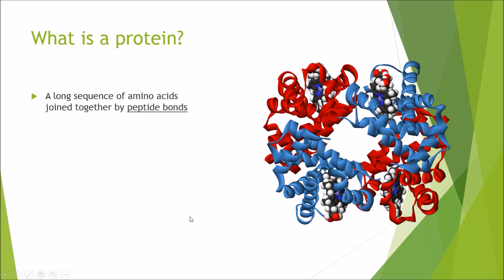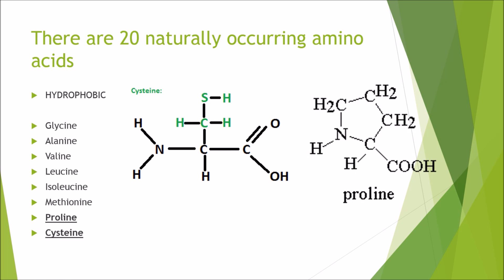So next, what is a protein? Well a protein is a long sequence of amino acids joined together by peptide bonds. And this here is just a general diagram of how you'll see some proteins represented. So let's just go right back to basics again. There are 20 naturally occurring amino acids.